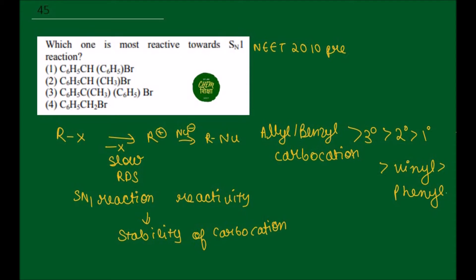Now we'll see the first given option: C6H5-CH(C6H5)-Br.